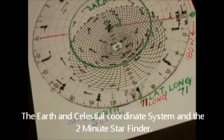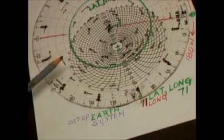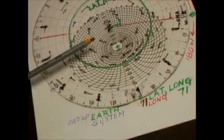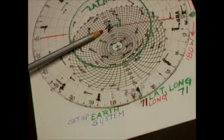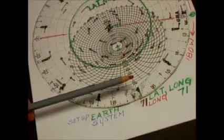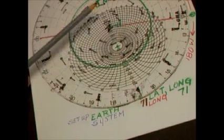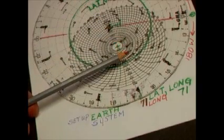The Earth and Celestial Coordinate System and the view from the Two-Minute Star Finder. This is the Earth Coordinate System. We're looking at the North Pole and the entire North Hemisphere, from one green line to the other.